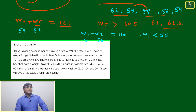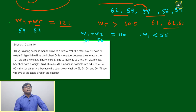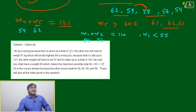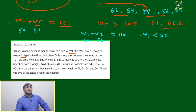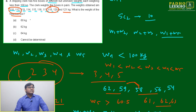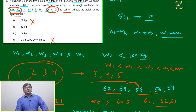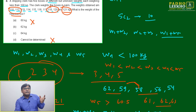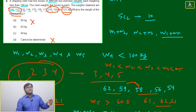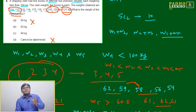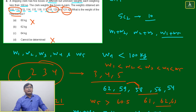Looking at the answer choices: one option says 61 kg, another 64 kg, another 60 kg, and 'cannot determine.' Based on our analysis — observing 121 as the highest pairwise sum — the heaviest box must be more than 60 kg, so 60 kg is eliminated. 'Cannot determine' is also eliminated.